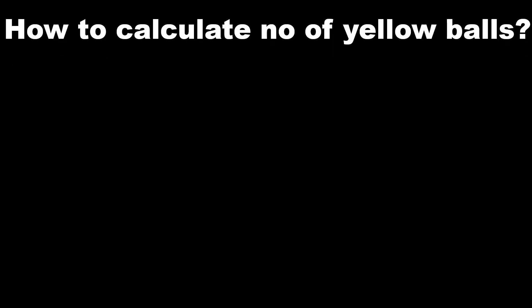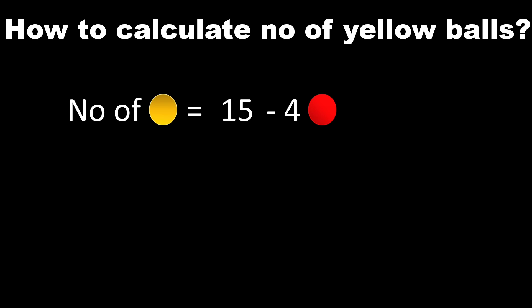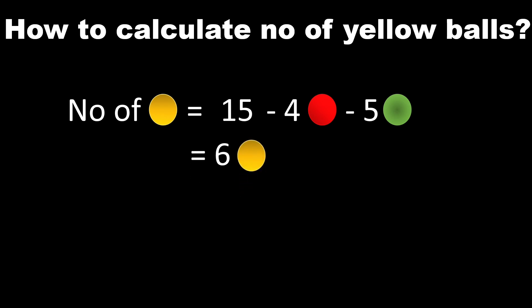How to calculate the number of yellow bowls in the packet? To find the number of yellow bowls: total number of bowls, 15, minus the number of red bowls, which is 4, minus another number of bowls, 5 green bowls, to give us 6 yellow bowls.